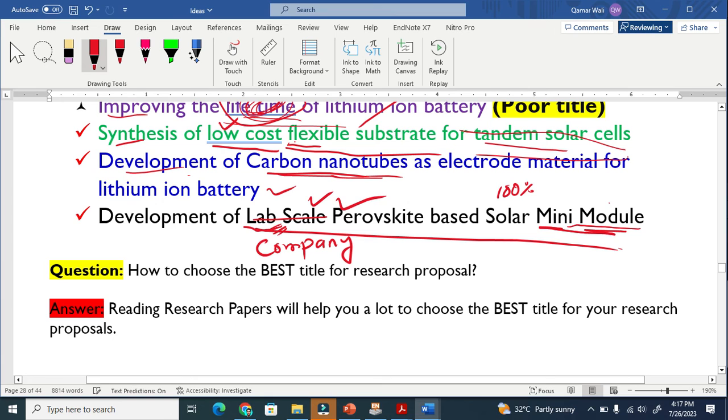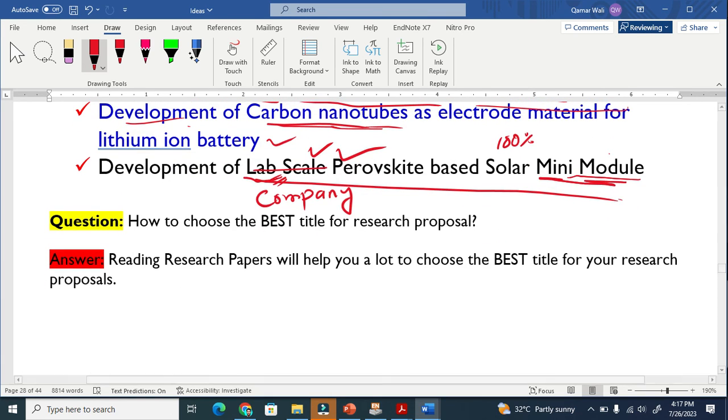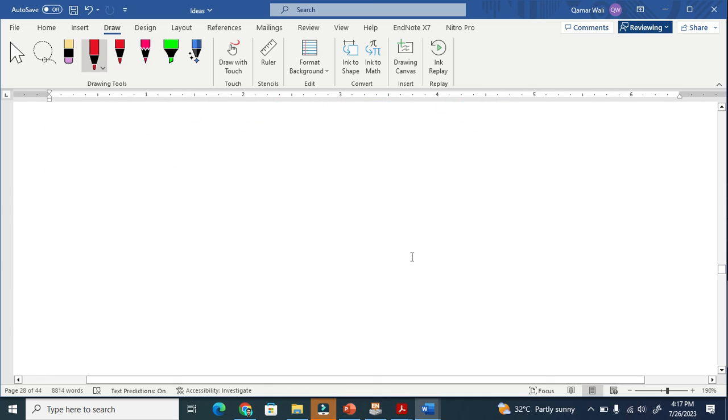Now here I put one question: how to choose the best title for research proposal? So the answer is basically reading research papers. There is no shortcut. If you read more and more titles, you can choose the best title for your research proposal.